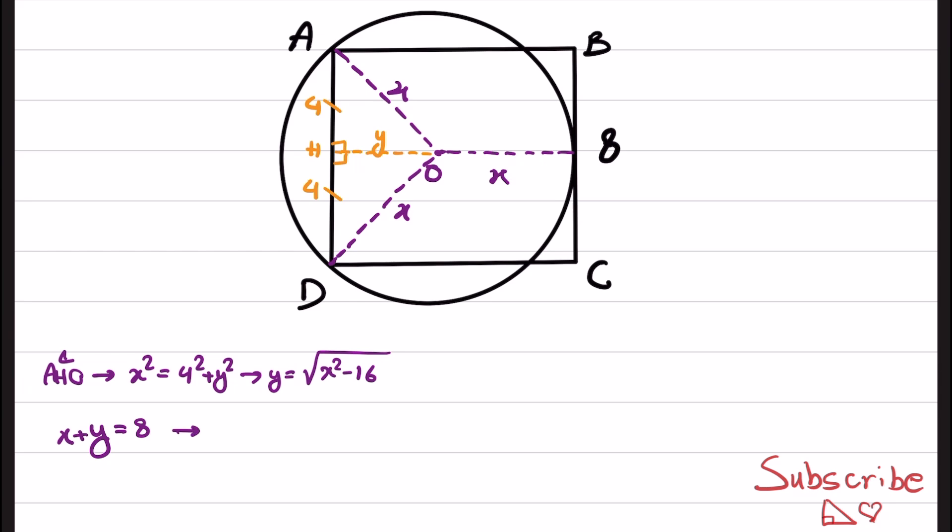Now, if we replace Y in this equation, we will have X plus square root of X squared minus 16 is equal to 8. And we try to square both sides, but first I have to move X to the right-hand side. So square root of X squared minus 16 is equal to 8 minus X. Now let's square both sides. We will have X squared minus 16 is equal to X squared plus 64 minus 16X. We can further simplify this. From this, we will have 16X is equal to 64 plus 16, which will be 80. And from this one, X equals 5.